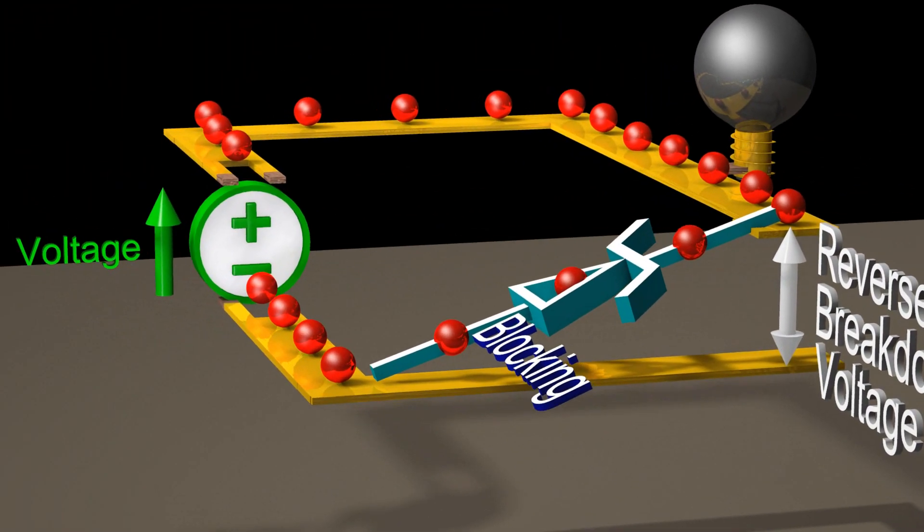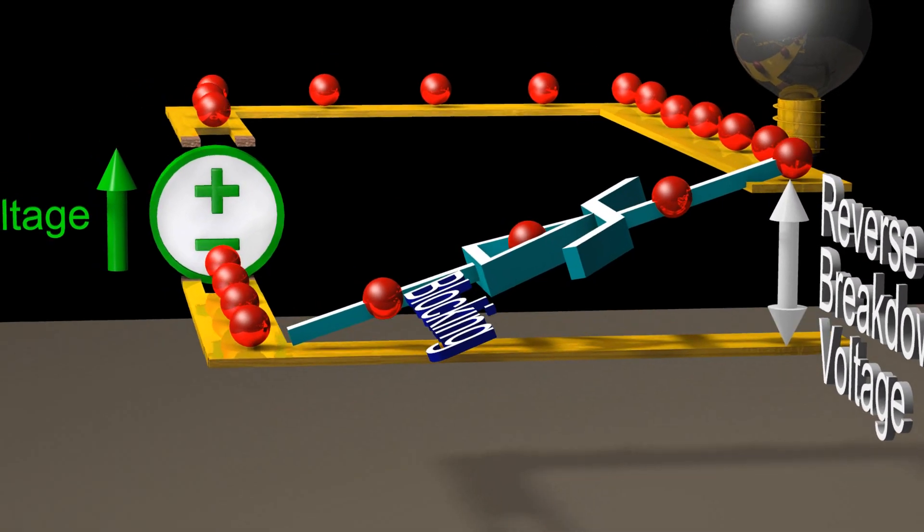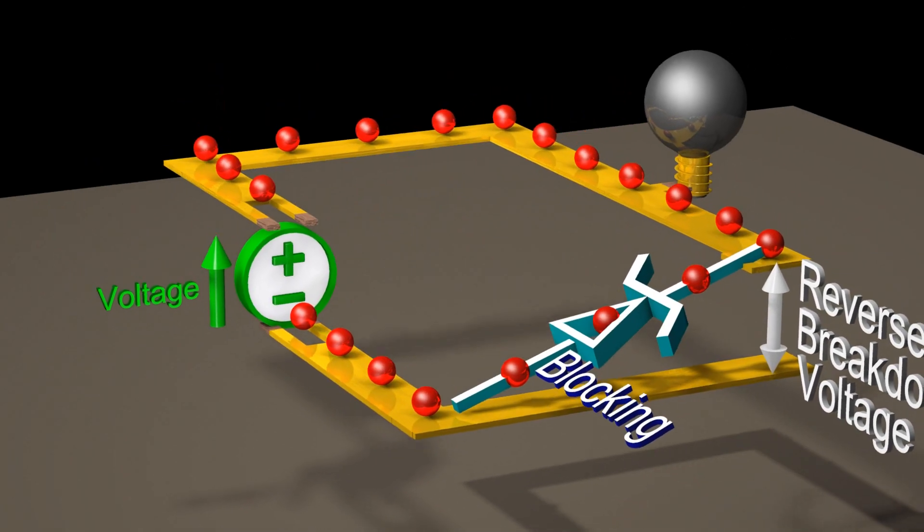When a reverse voltage smaller than the breakdown voltage is applied, the Zener diode blocks current just like a normal diode.